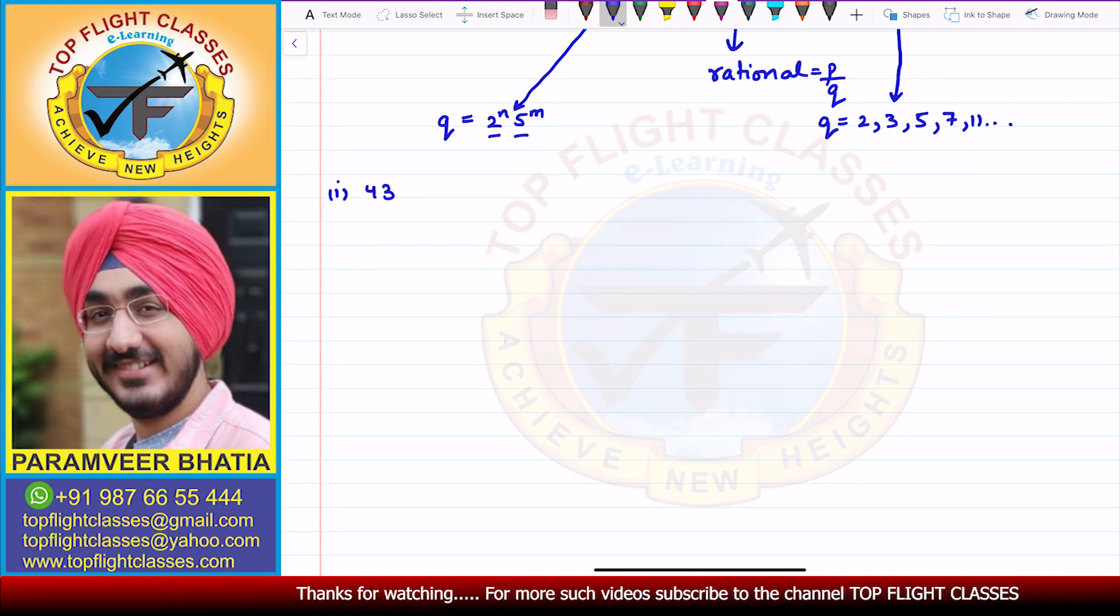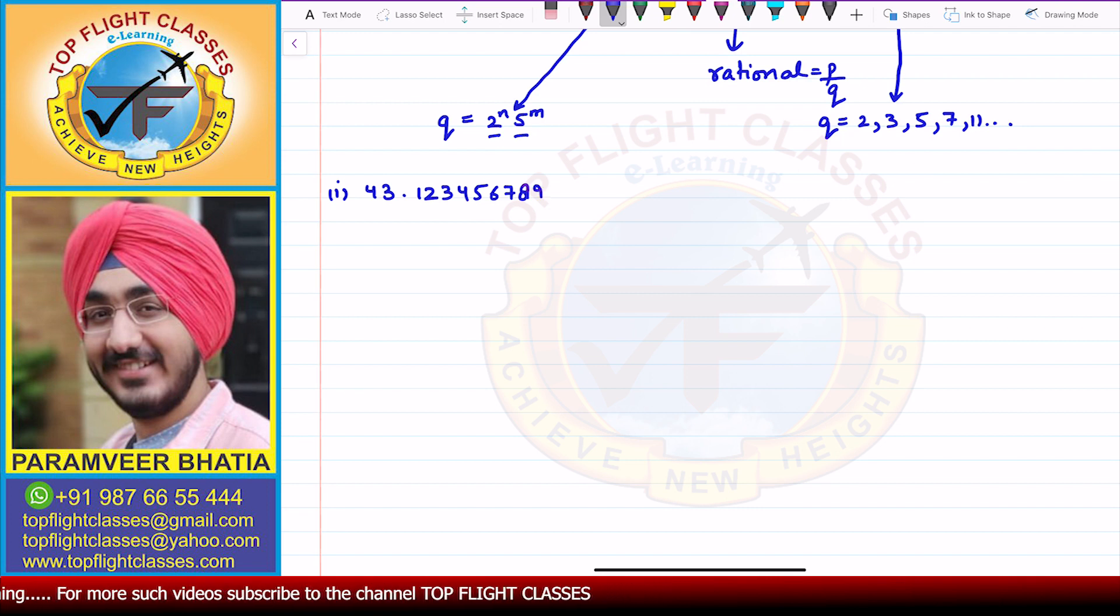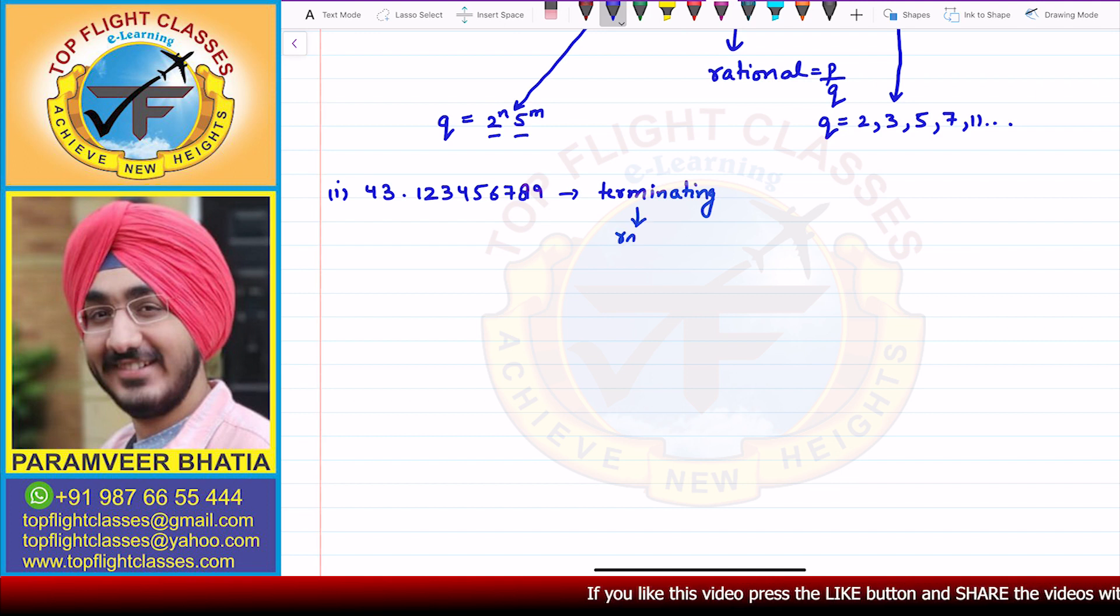In this question, the first part, the number is 43.123456789. Now we stop here, that means we terminate. So in this case the decimal expansion is terminating. We have already discussed that if we have a terminating decimal expansion, the result will be rational. So this number 43.123456789 is a rational number.